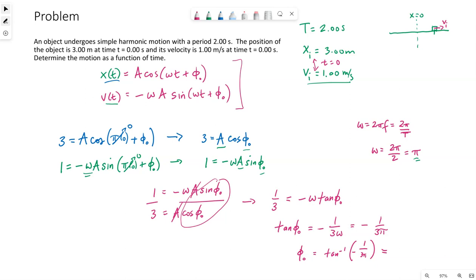Now again, our calculator needs to be in radian mode, since omega is in radians per second. So inverse tangent, negative one over three pi. Make sure you put parentheses in your calculator around the three pi so that the pi is in the denominator. So phi naught is negative 0.106 radians.